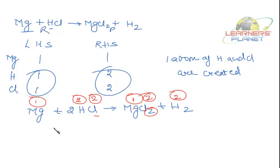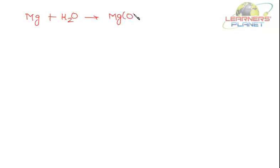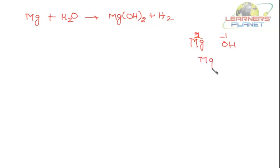Now I'll give you another equation — let's see if you can balance it. Another equation involving magnesium: magnesium plus water gives magnesium hydroxide and H₂. Magnesium hydroxide formula is Mg(OH)₂ because the valency of magnesium is 2 and OH is a radical with valency minus 1. So we cross multiply the numbers with the symbols to get magnesium hydroxide. Can you balance it? Just pause the session and balance this equation.